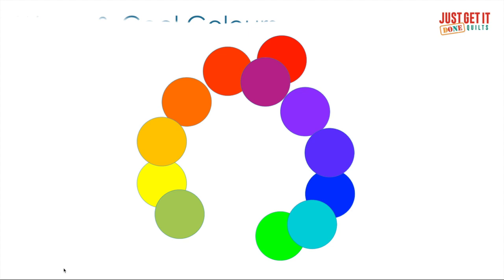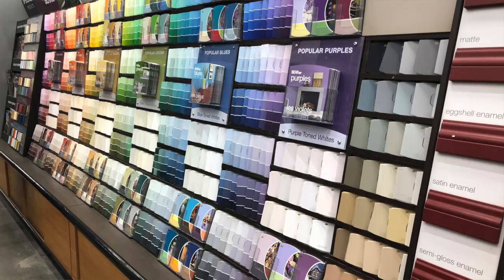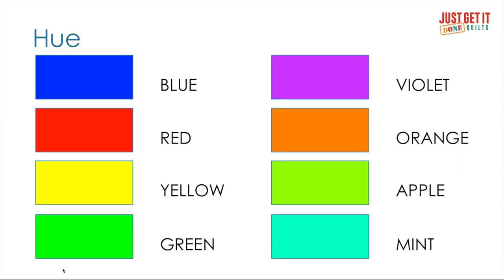Newton also said that every warm color had an opposite cold color — like I said, a really neat and tidy system. Now you're probably saying, 'Okay, that's all fine and dandy, Karen, but where do all these colors come from?' All those colors, which are a combination of primary, secondary, and tertiary colors, are called hues.